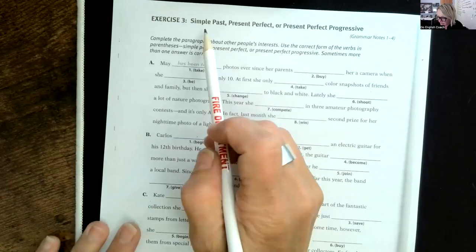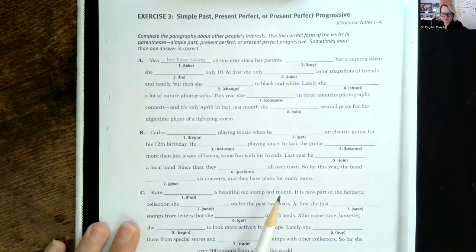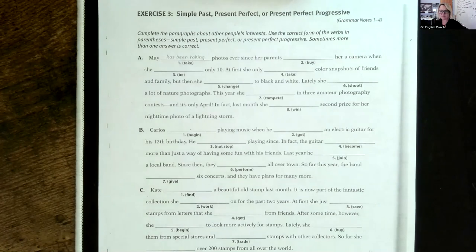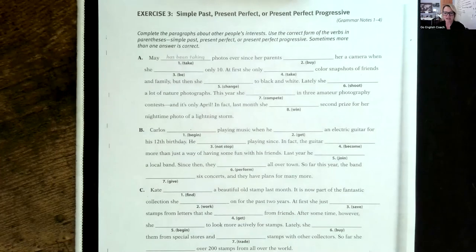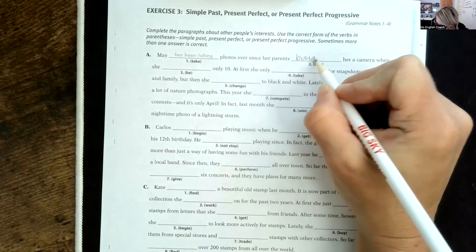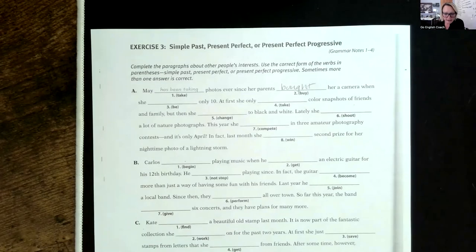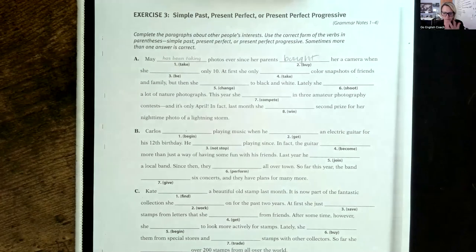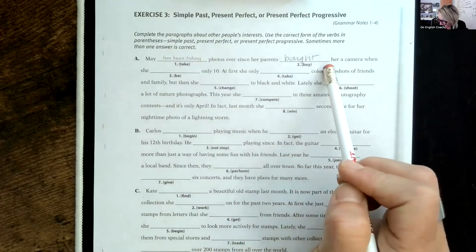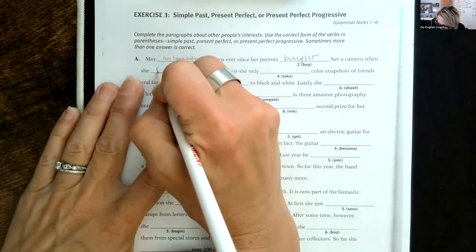Let's come over and work on some exercises at the computer. We're completing paragraphs using simple past, present perfect, or present perfect progressive — it's hard when there are three choices. Sometimes more than one answer is correct. First: 'May has been taking photos ever since her parents bought her a camera when she was only 10.' 'Bought' is simple past because buying something is usually a one-time thing.